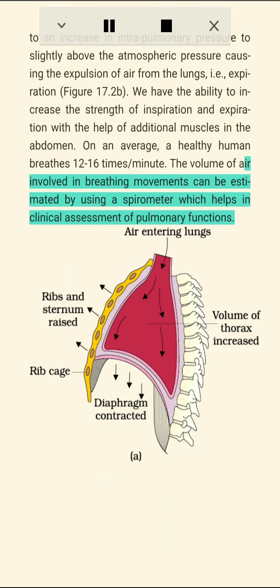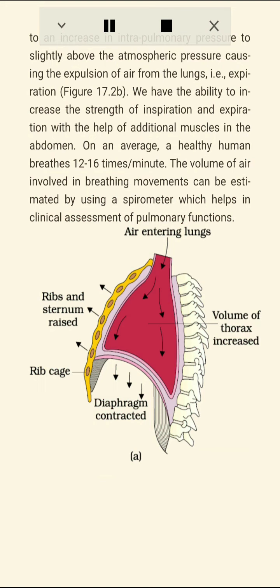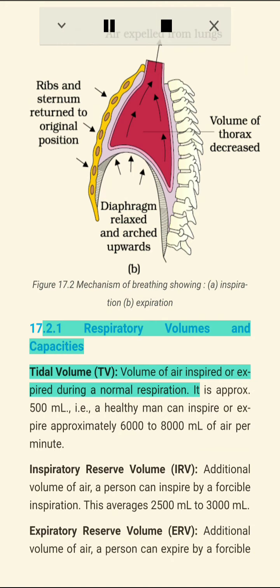On average, a healthy human breathes 12 to 16 times per minute. The volume of air involved in breathing movements can be estimated using a spirometer, which helps in the clinical assessment of pulmonary functions.